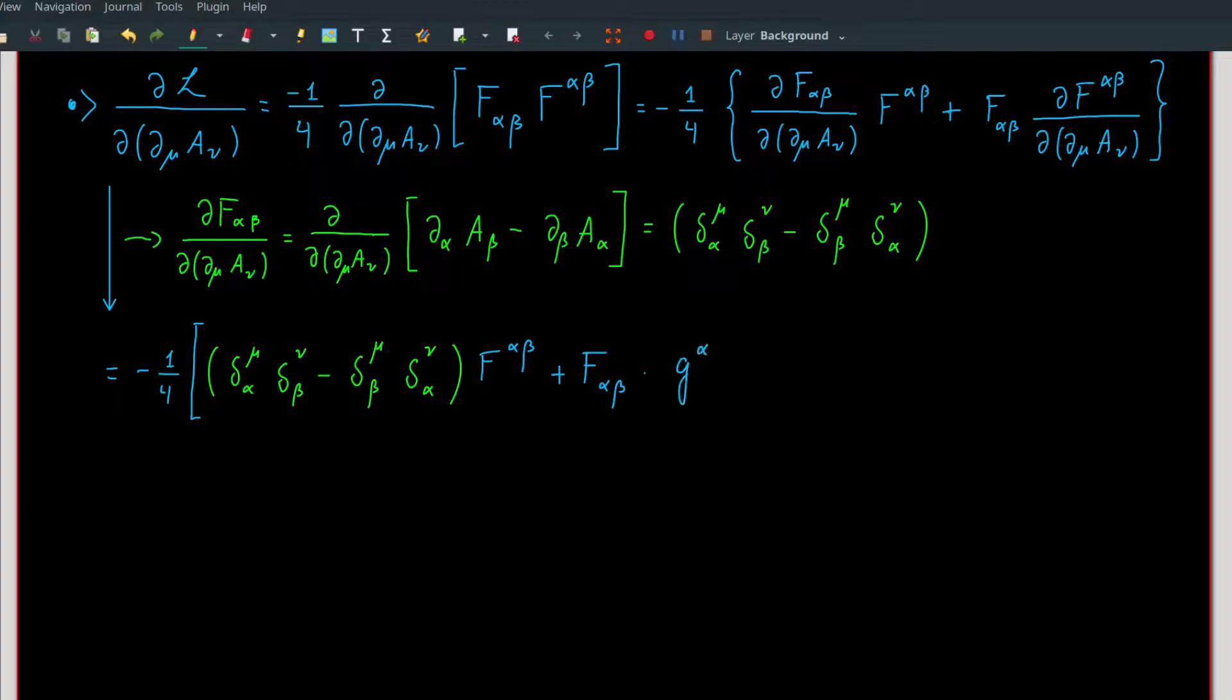For the second term, we can use the same result written in green by lowering the indices of f before taking the derivative. Here I lower the indices by multiplying f with g^{αλ} and g^{βκ}. Distributing f_{αβ} into the green parenthesis, we can use the property of Kronecker delta where indices can change according to the Kronecker delta's indices.